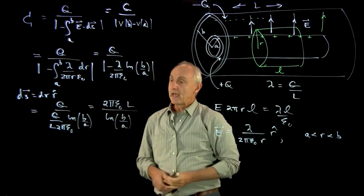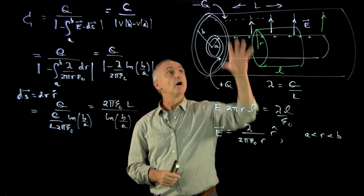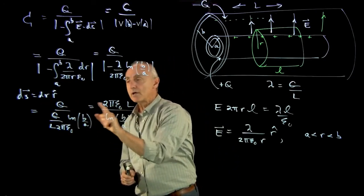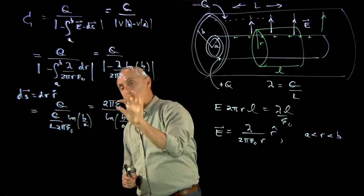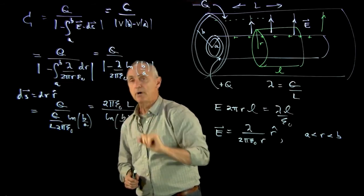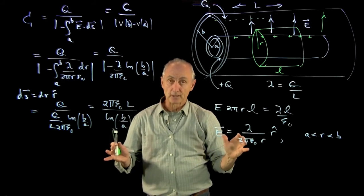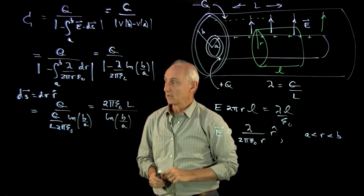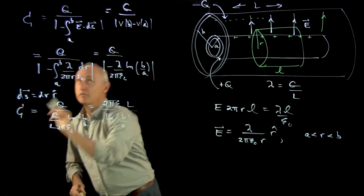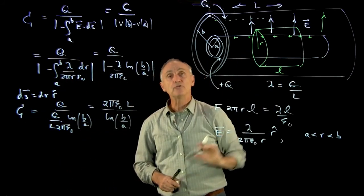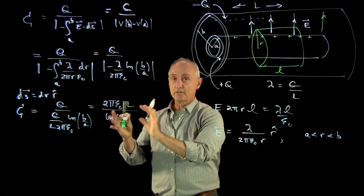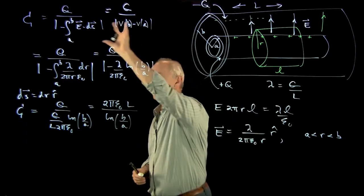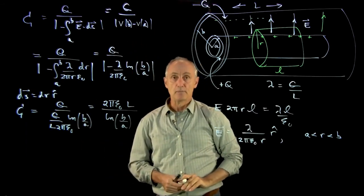And so once again we have an answer that's a geometric property of our system, neglecting edge effects. Notice dimensionally that the capacitance is proportional to a length — a length divided by a dimensionless constant — which was the same for our parallel plate capacitor where we had area divided by distance, leaving a quantity proportional to length. This is the capacitance of our two cylindrical conductors held at plus Q and minus Q. We derived this directly from first principles: Gauss's law and the definition of capacitance. That's our methodology for problem solving here.